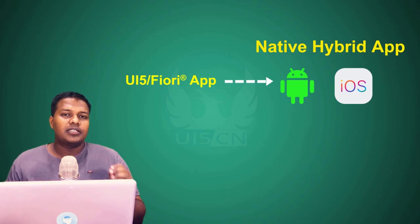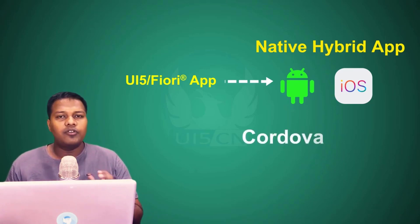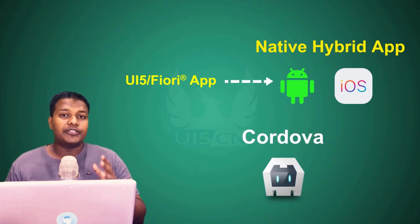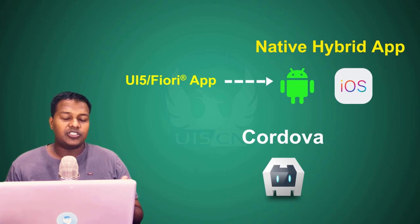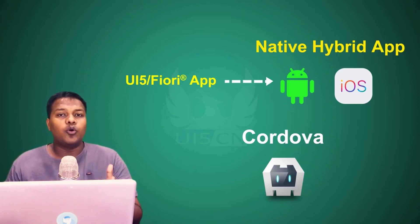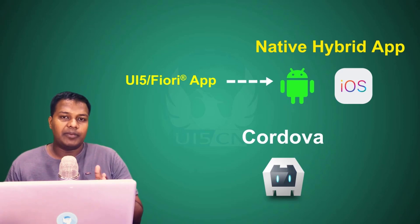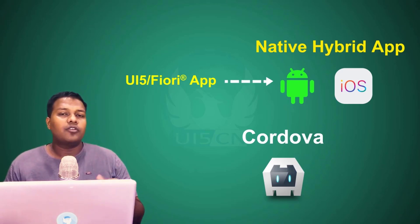We will reduce the scope and only cover hybrid native applications using Cordova. We will not be using the Hybrid Application Toolkit (HAT) because HAT has reached end-of-life. When you use HAT, it is actually using Cordova under the hood to convert your web application into a native hybrid application to run on your native device.